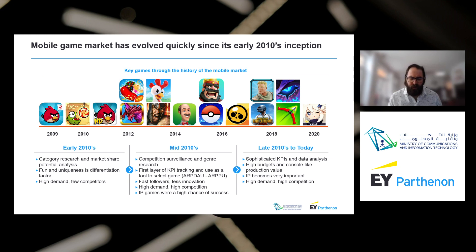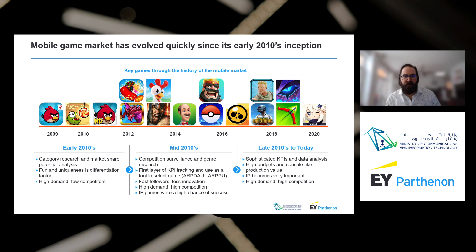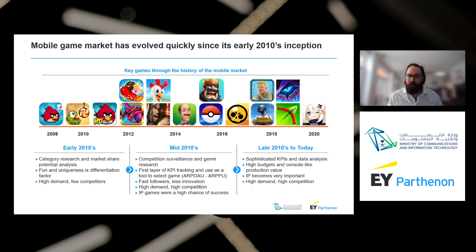Everything changed when Apple launched the iPhone. Some of the first successful mobile games were Fruit Ninja and Doodle Jump, but then Rovio came out with Angry Birds, which completely changed the industry. Early on, making games for mobile was definitely a category research and market share potential analysis exercise — how many games are popular in the puzzle genre, how many in RPGs — and you would try to grab that market because there was very little competition.